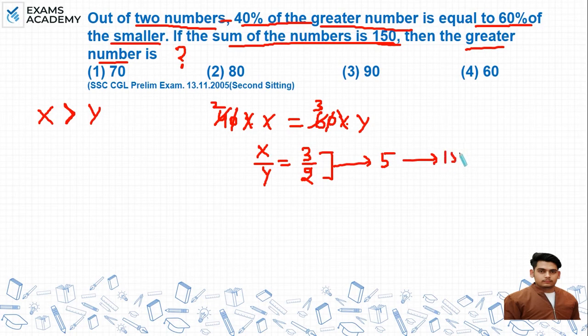The sum is 150. So if 5 is 150, then how much is the value of 1 unit? 30.